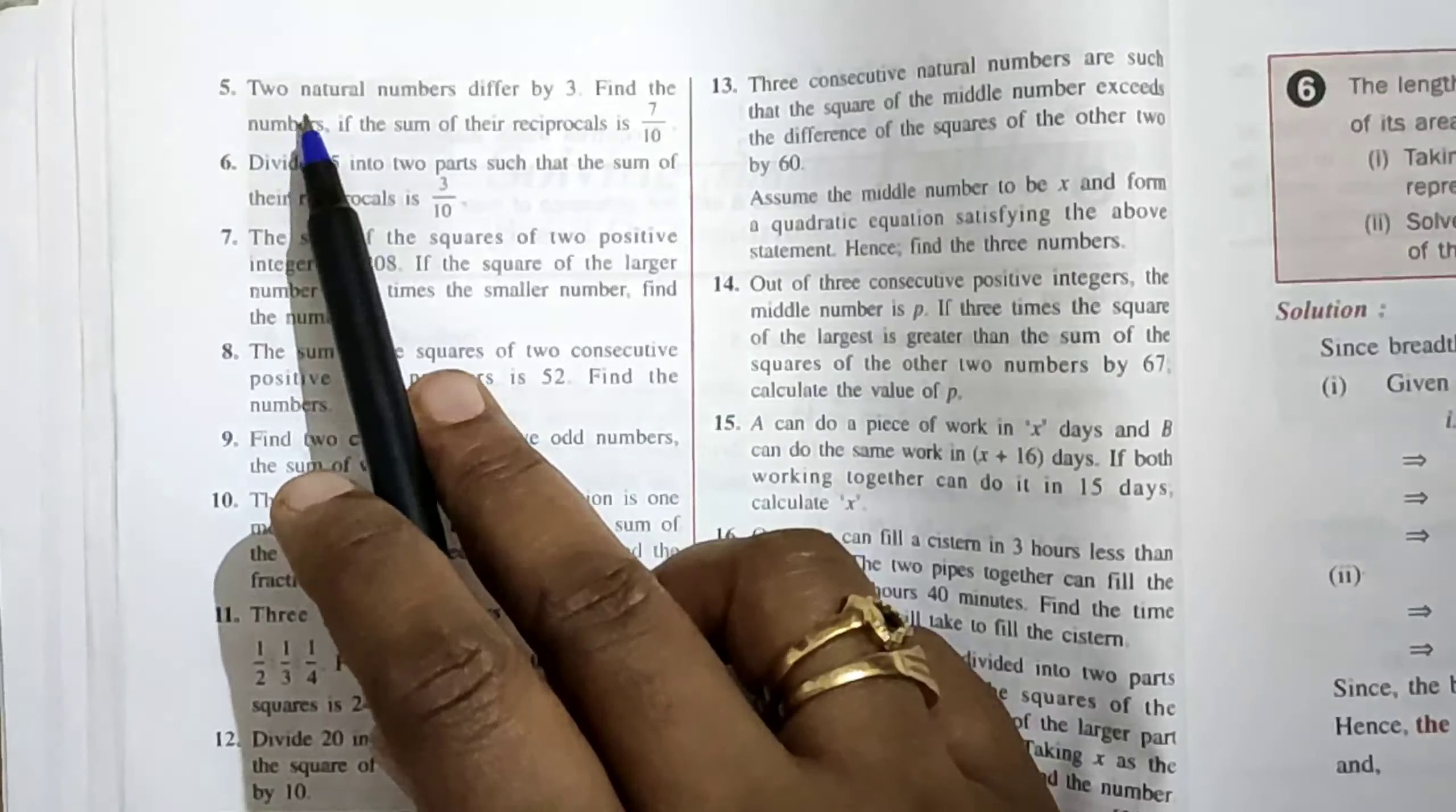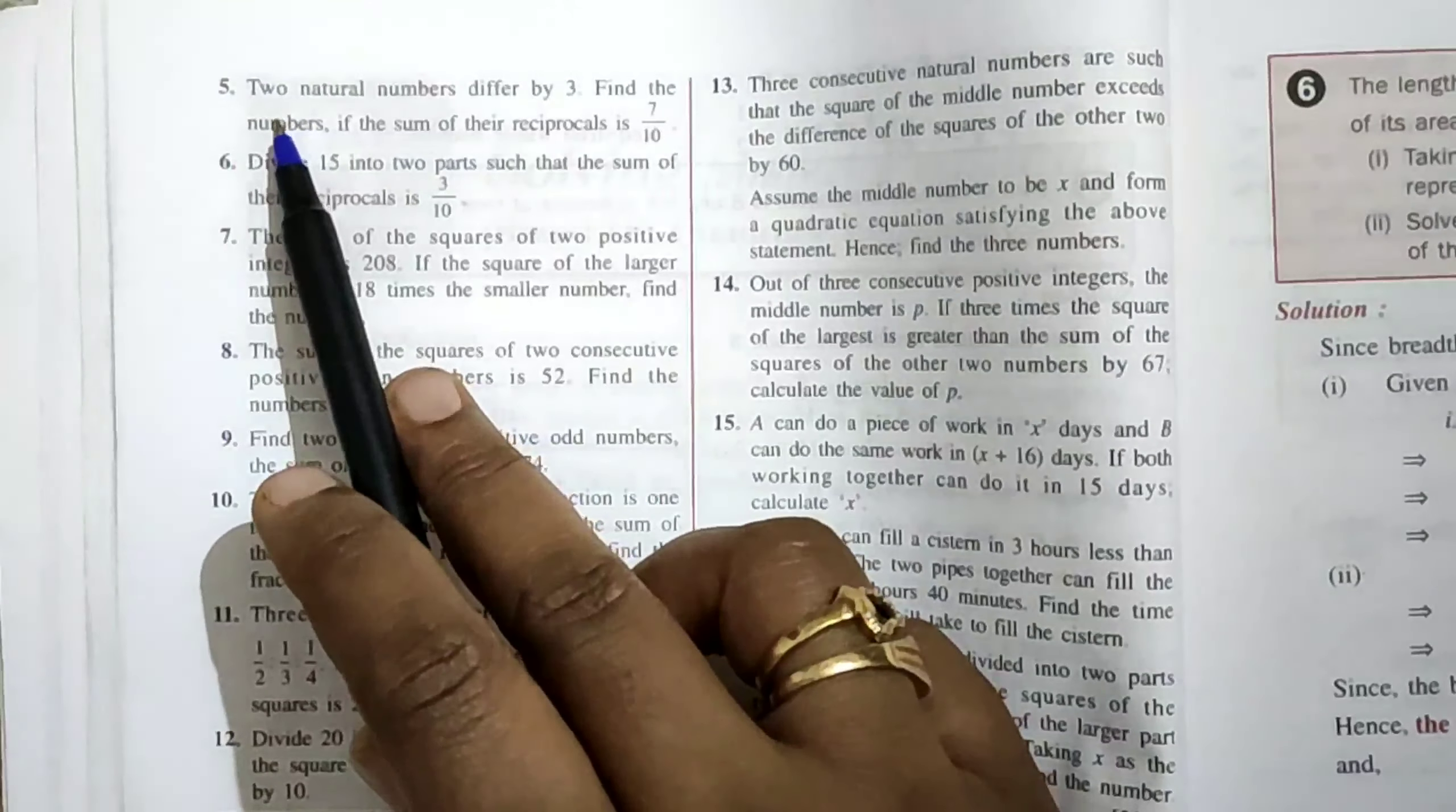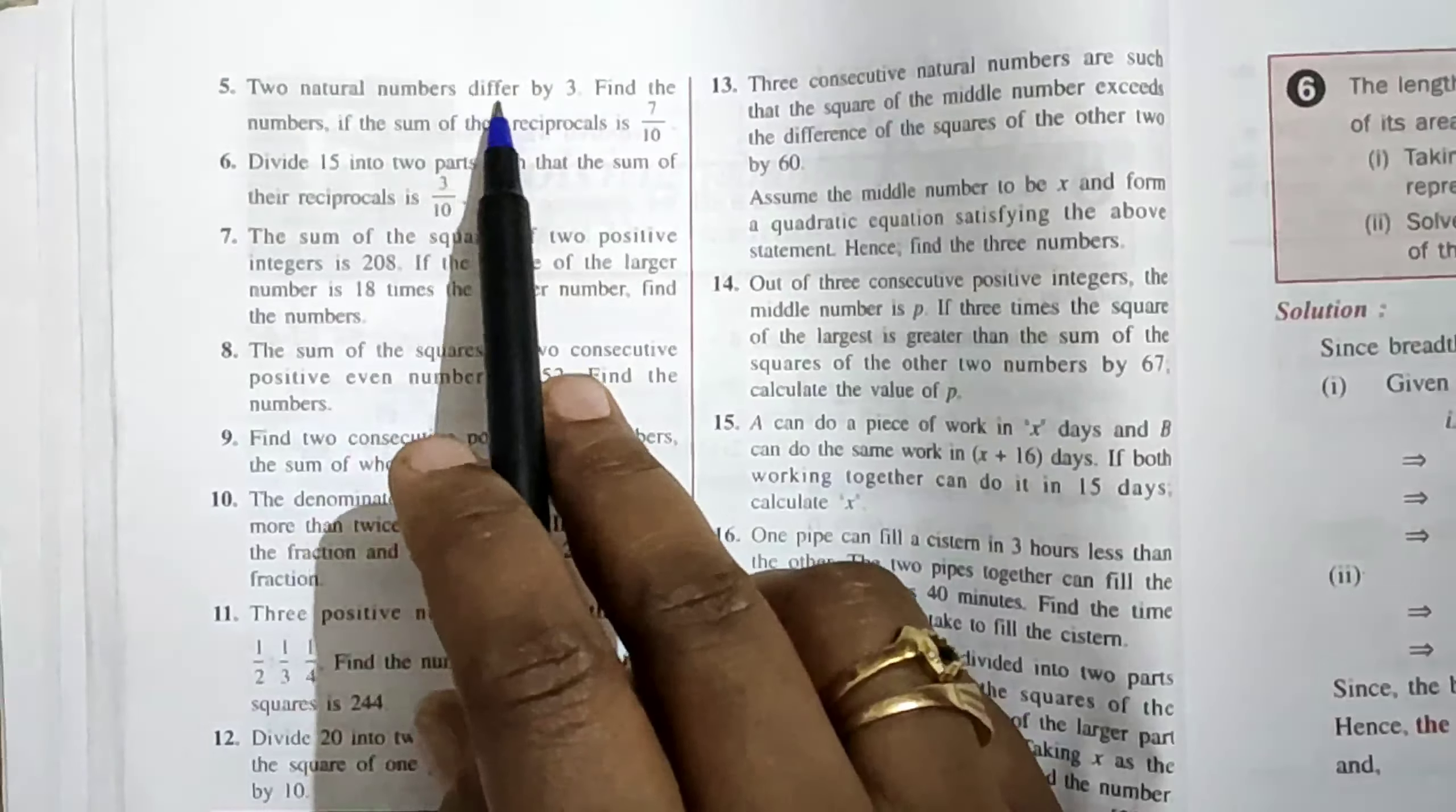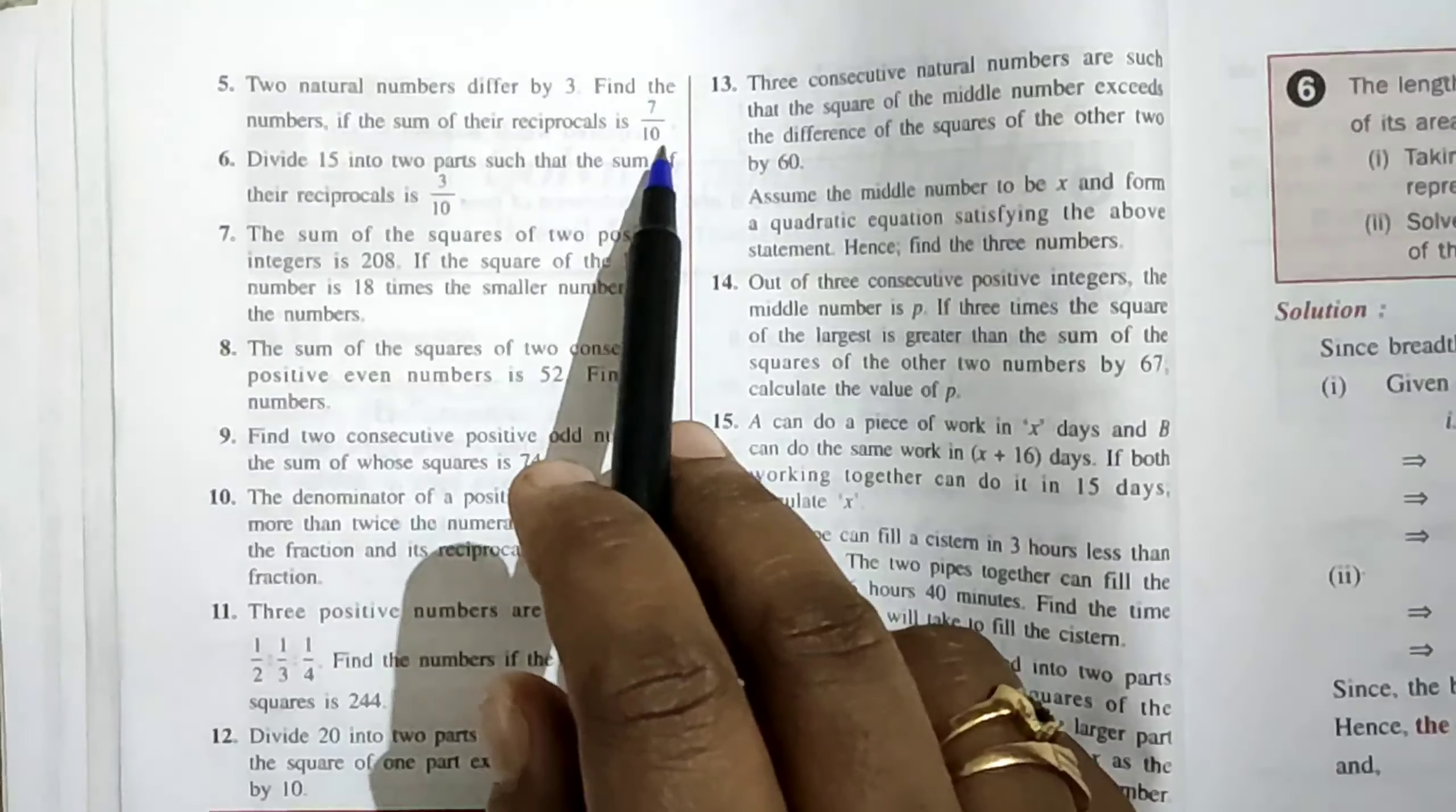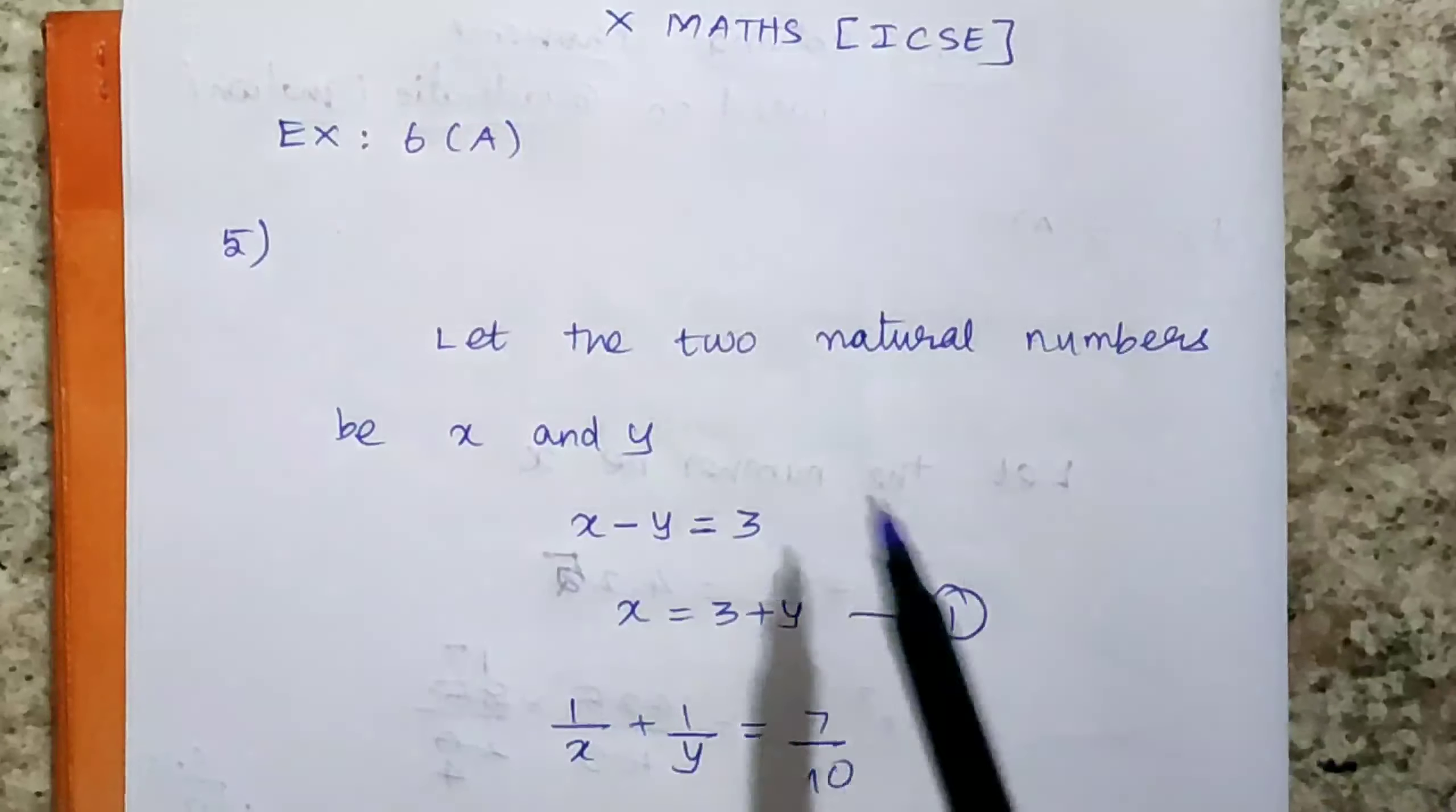This is based on solving quadratic equations. Two natural numbers differ by 3. Find the numbers if the sum of their reciprocals is 7 by 10.